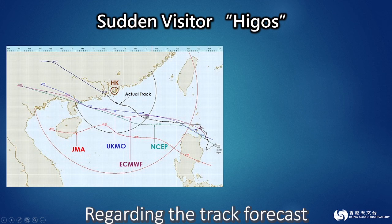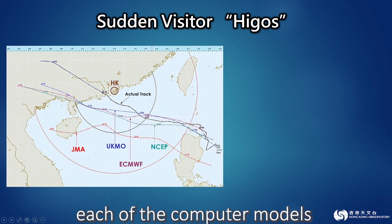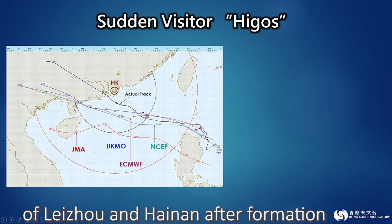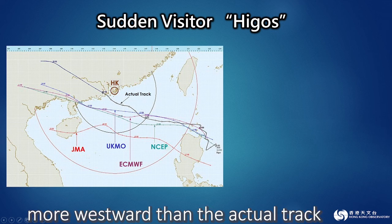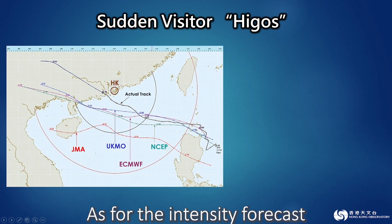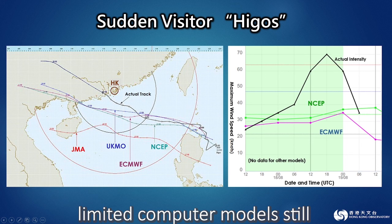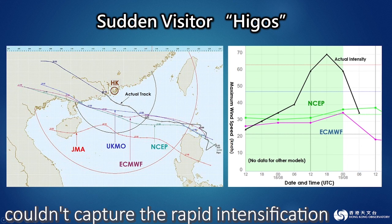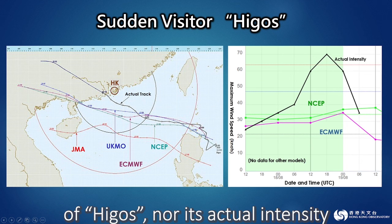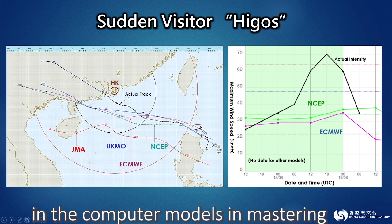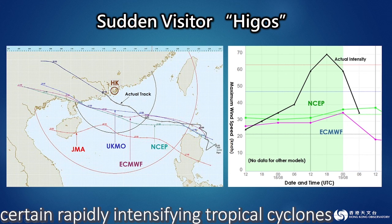Regarding the track forecast, each of the computer models on 18 August generally forecasted that Higos would move to the vicinity of Leizhou and Hainan after formation, which was more westward than the actual track. As for the intensity forecast, on the evening of 17 August, limited computer models still couldn't capture the rapid intensification of Higos nor its actual intensity. This illustrates some limitations in the computer models in mastering certain rapidly intensifying tropical cyclones.